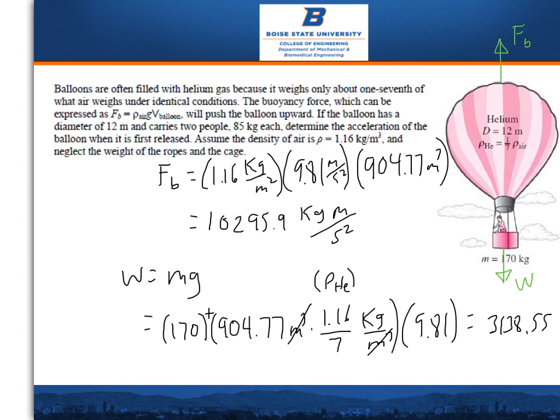Assume the density of air is rho equals 1.16 kilograms per meter cubed and neglect the weight of the ropes in the cage.